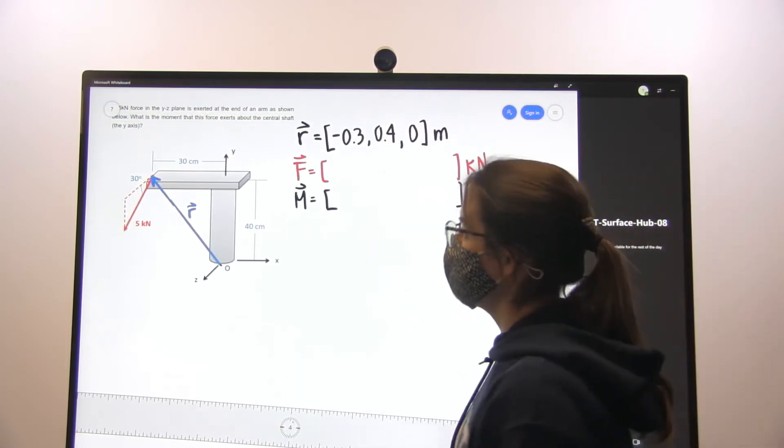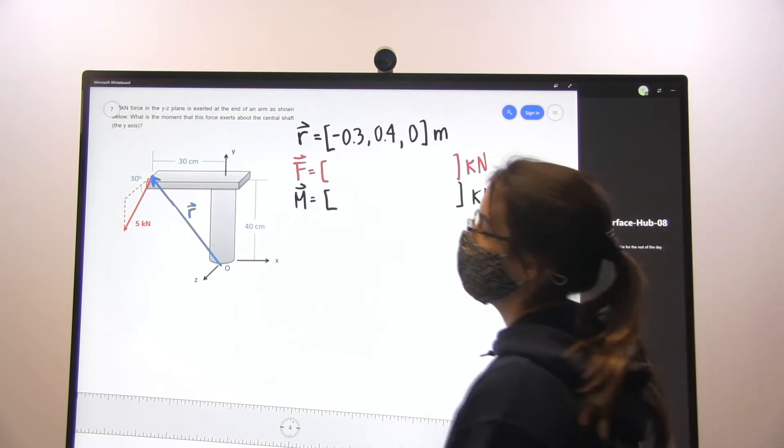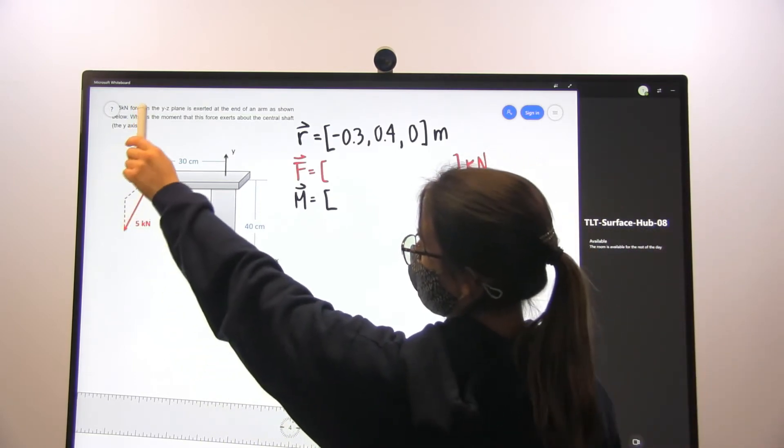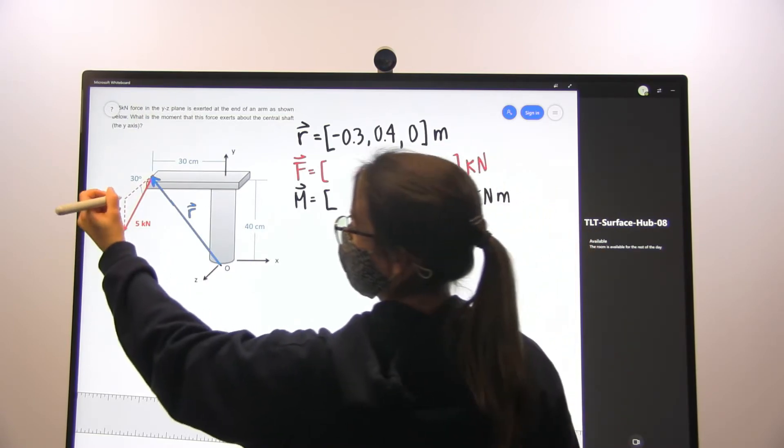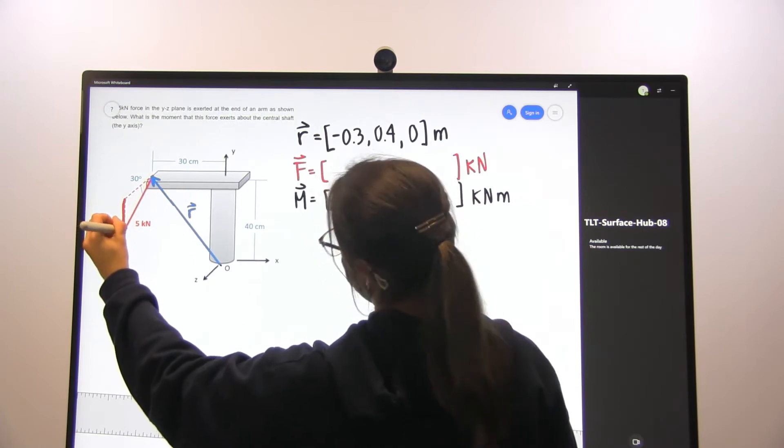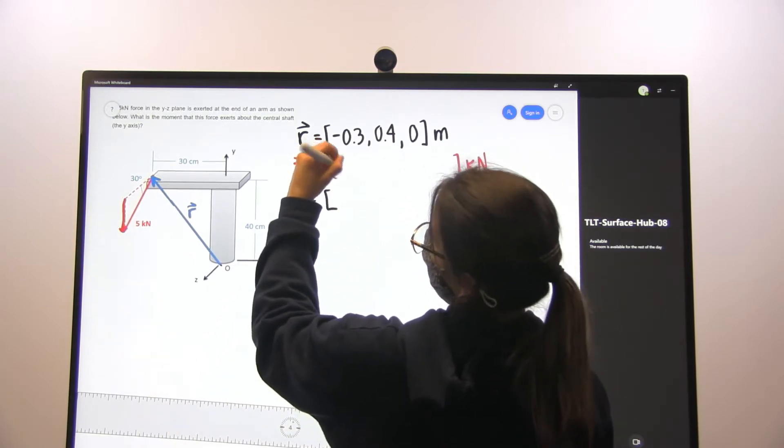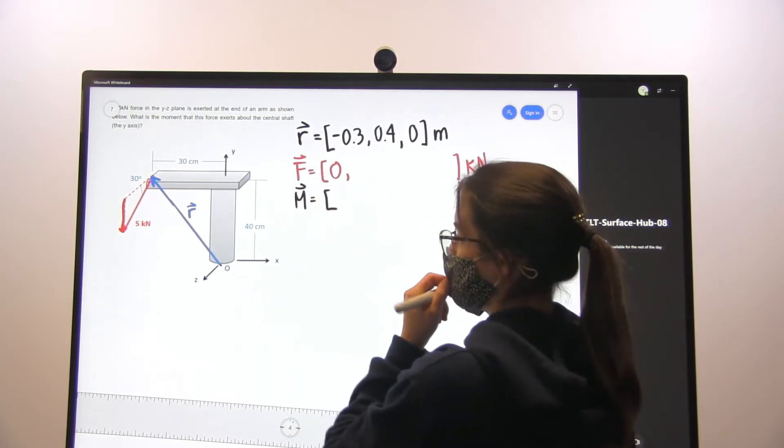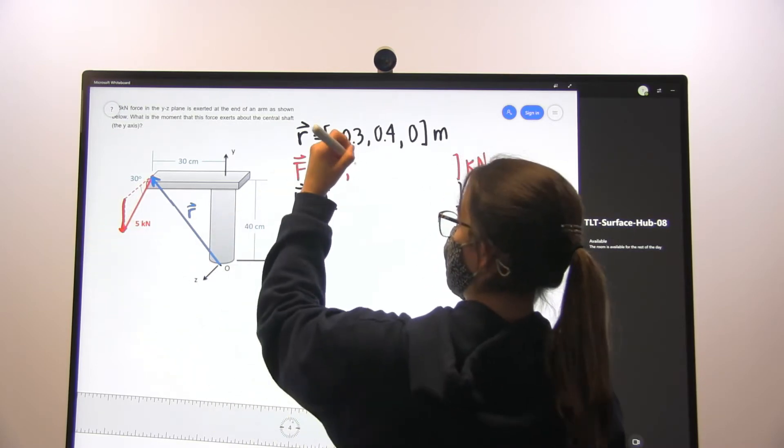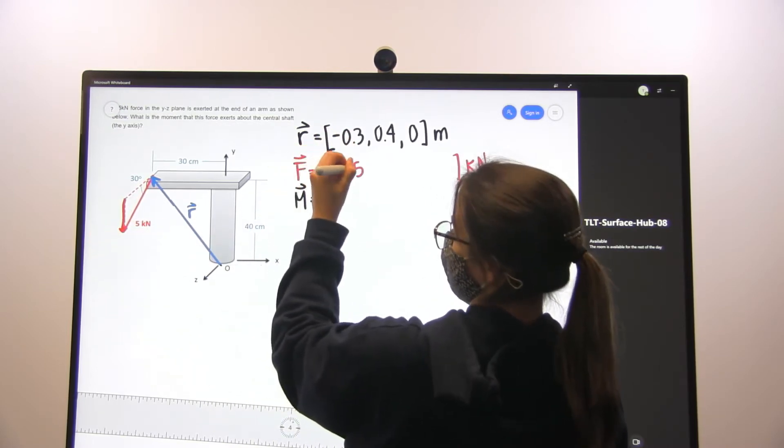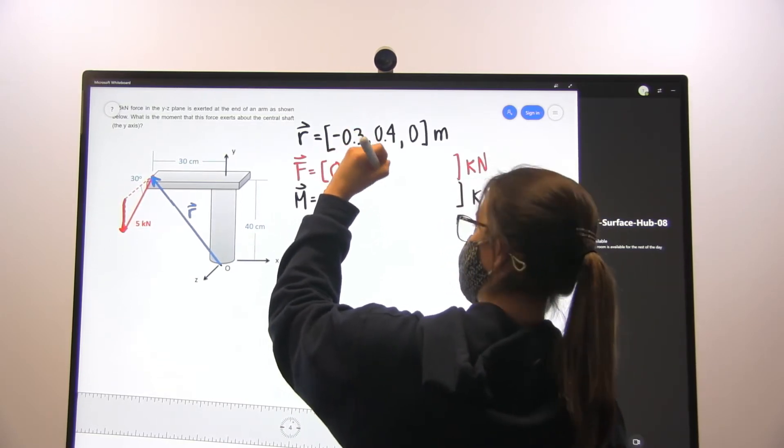We're next going to define our force, and this is going to be 5 kN. We are told that the force is being applied in the y-z-axis. So we start off by looking at our y-axis. Since it's in the y-z plane it's 0 in the x, then we know that the force component in the y-direction is 5 kN in the negative direction times the sine of our angle, so sine 30.